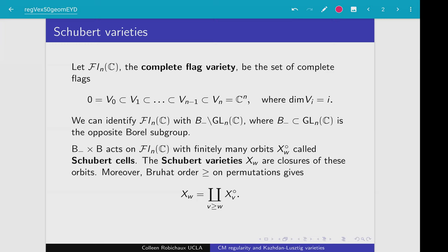One particularly nice property that these Schubert varieties have is that when we take the closure of these Schubert cells to get Schubert varieties, these varieties will decompose particularly nicely in terms of the Schubert cells. And this decomposition is governed by Bruhat order on permutations.